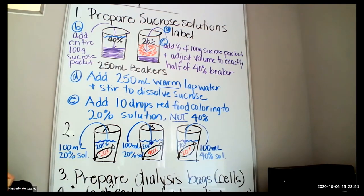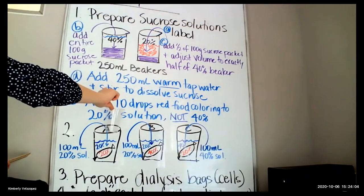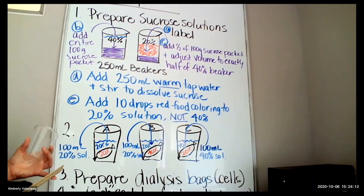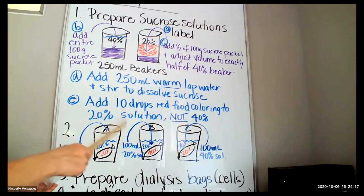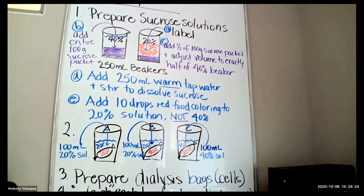Now we need to set up the experiment. We're going to have three cups labeled A, B, and C, each representing a different scenario — one isotonic, one hypertonic, one hypotonic. You'll already know which is which going into this, but we want to demonstrate which way water is going to move: into the cell, out of the cell, or into and out at an equal rate, depending on the scenario.